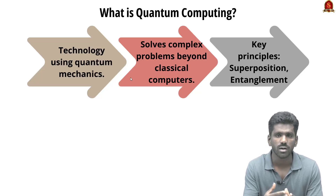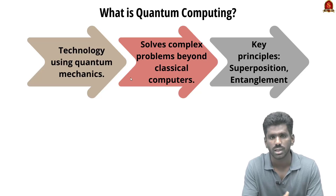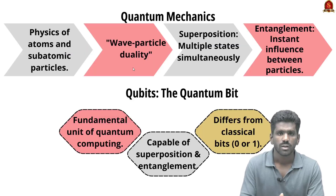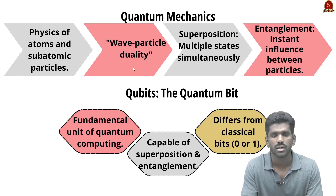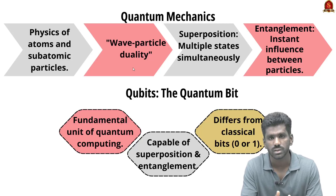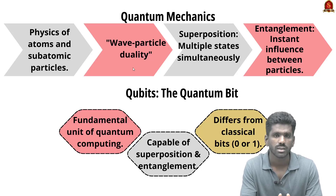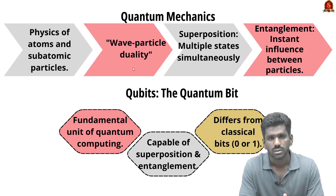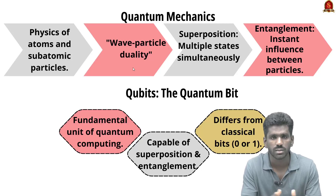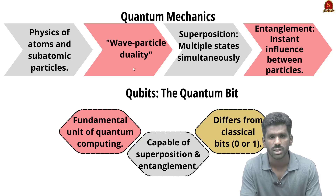Quantum mechanics is a branch of physics that explains how extremely small objects such as atoms and subatomic particles can exhibit both particle-like behavior and wave-like characteristics. The entire concept of wave-particle duality is the basis of quantum mechanics. Two important concepts in quantum computing are superposition and entanglement.